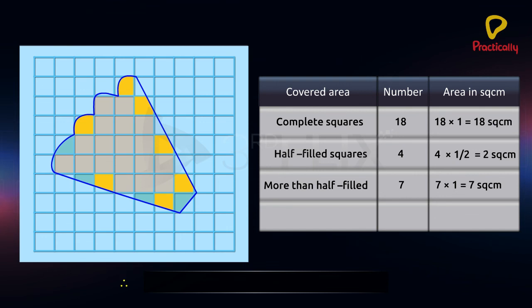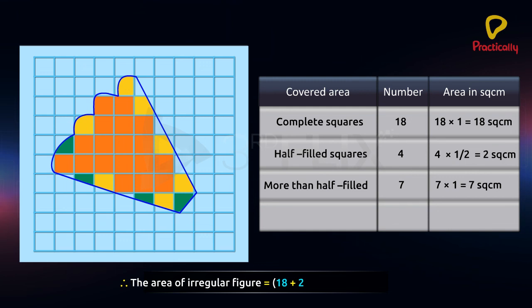Therefore, the area of irregular figure equals to 18 plus 2 plus 7 square centimetres equals to 27 square centimetres approximately.